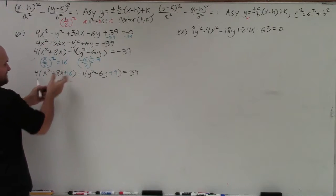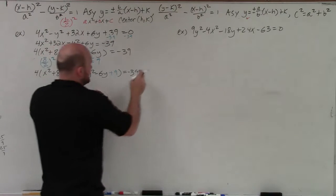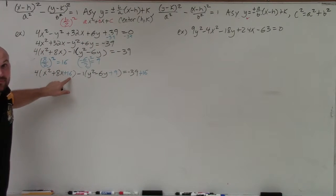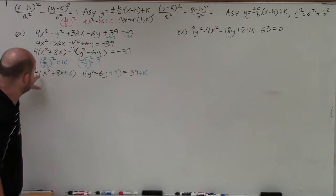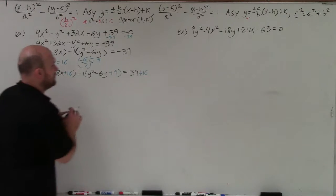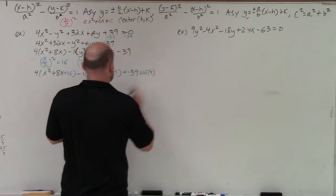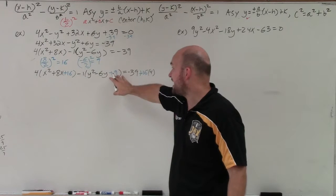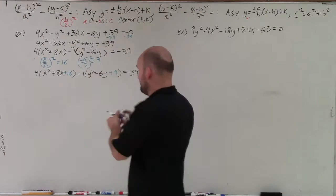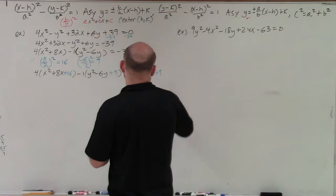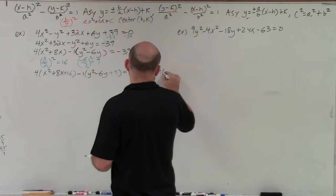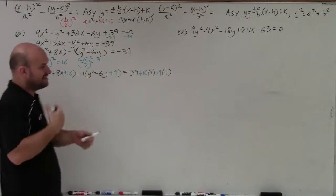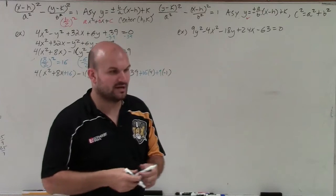Since I added 16 inside the first parentheses, but it's being multiplied by 4, I really added 16 × 4 = 64 to the left side. So I need to add 64 to the right side. And since I added 9 inside but it's being multiplied by negative 1, I need to add 9 × (−1) = −9 to the right side.